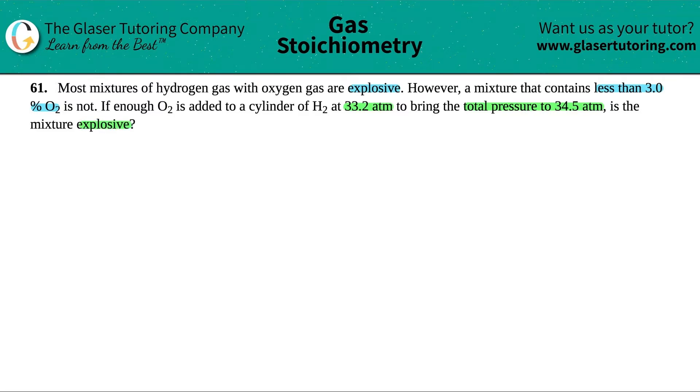Okay. So basically we have to find out what the percentage of our oxygen is. The sentence that's the most important part is they say that a mixture of gases that contain less than 3.0% of oxygen is not explosive. So we have to find out what our percent of oxygen is.